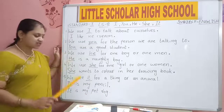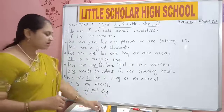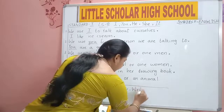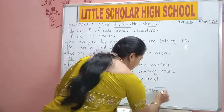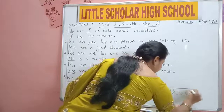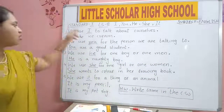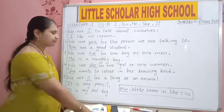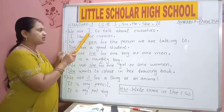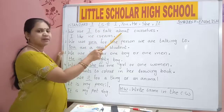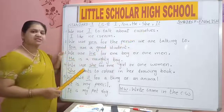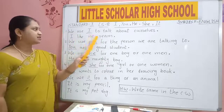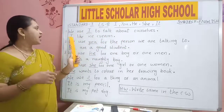Once again shall we read from the top? You are going to write all this in your classwork. Your homework is: write same in the classwork. You should write all five sentences in your classwork as it is on the board. Copy it from the board. We use I to talk about ourselves. I like ice cream.